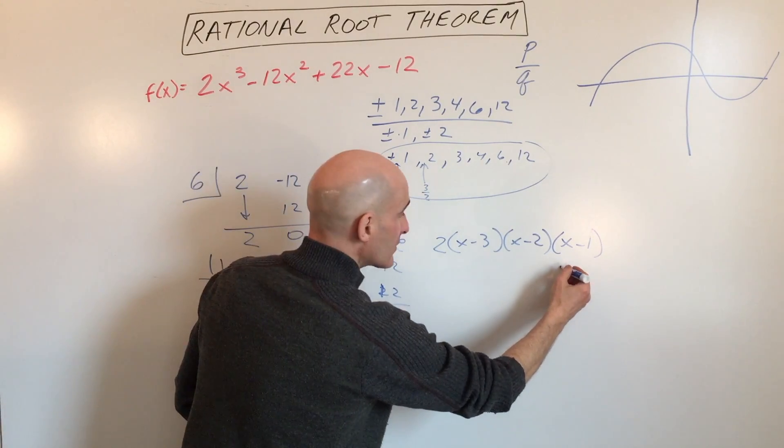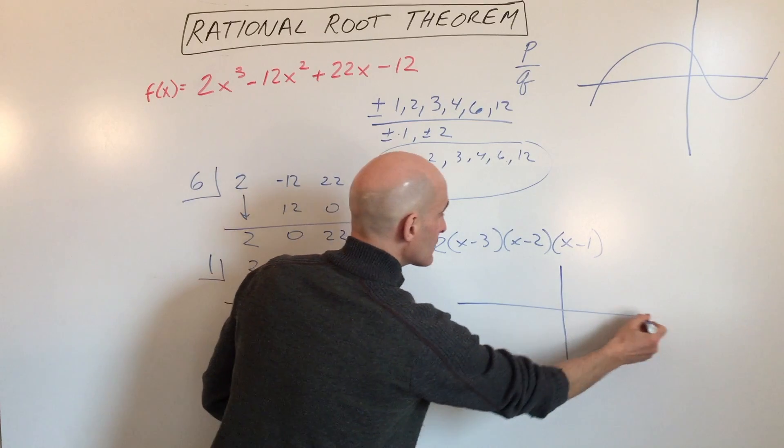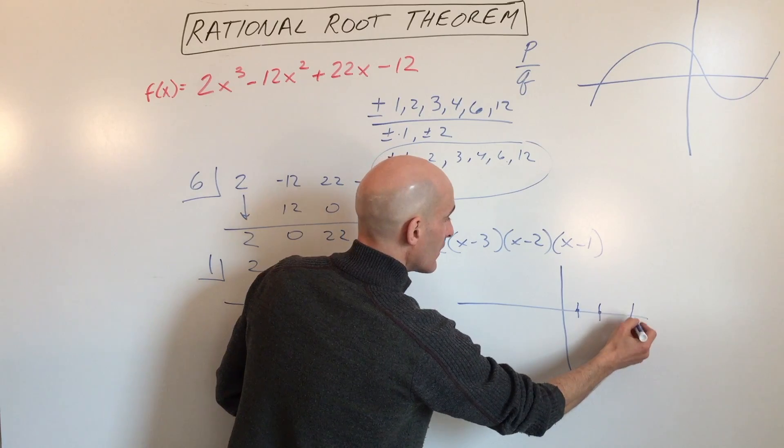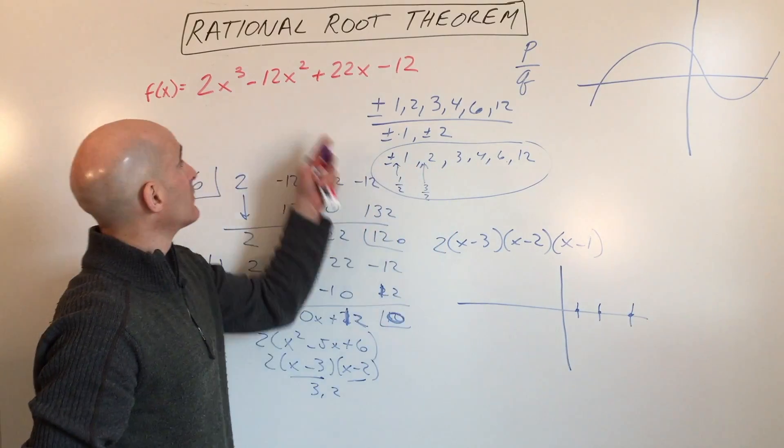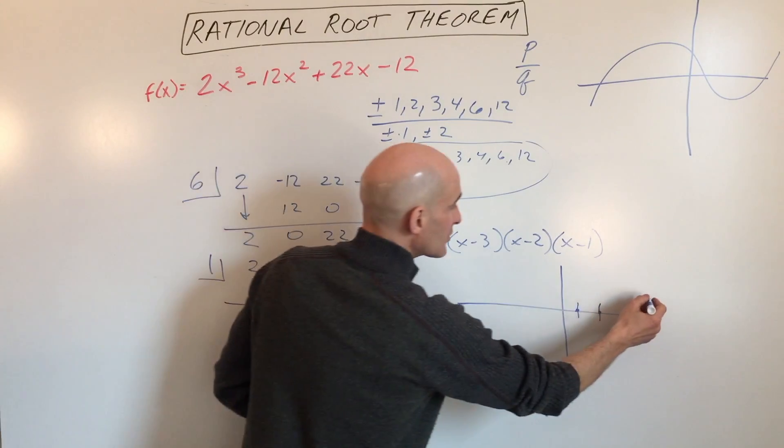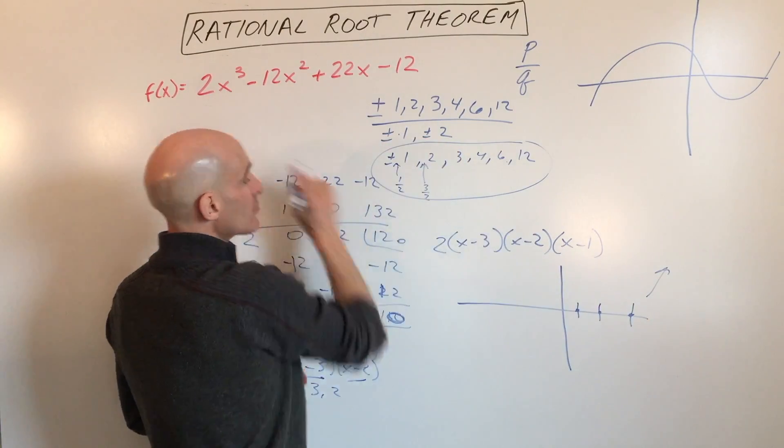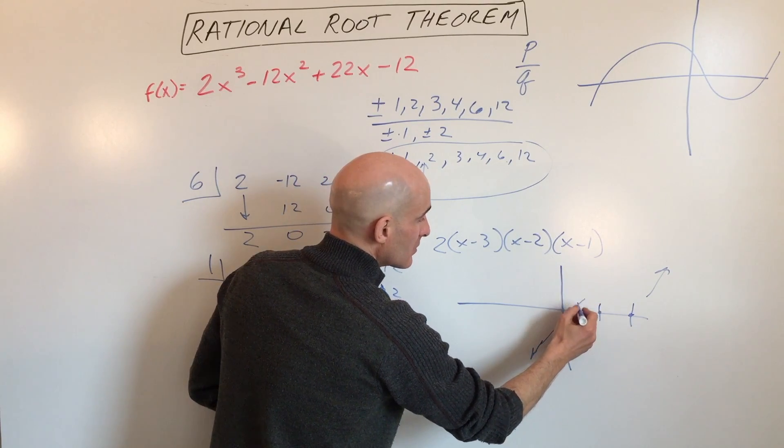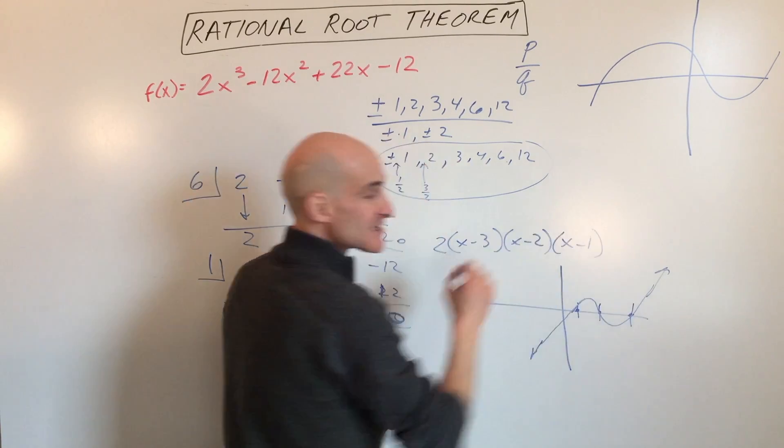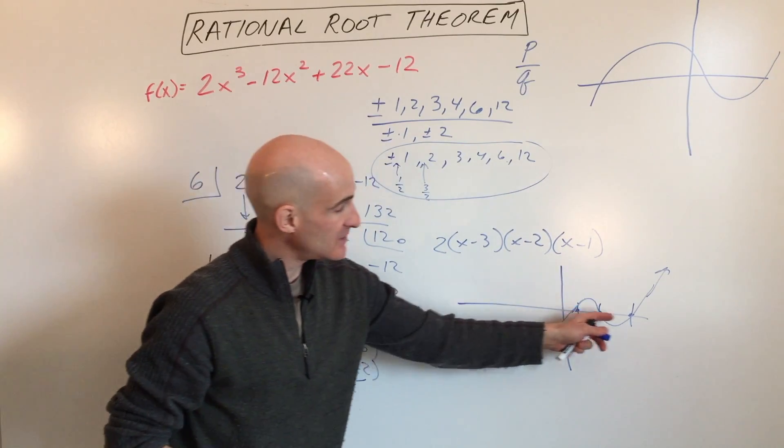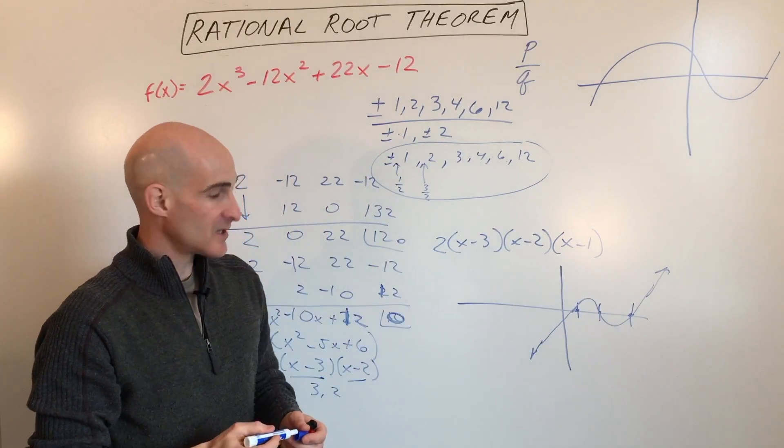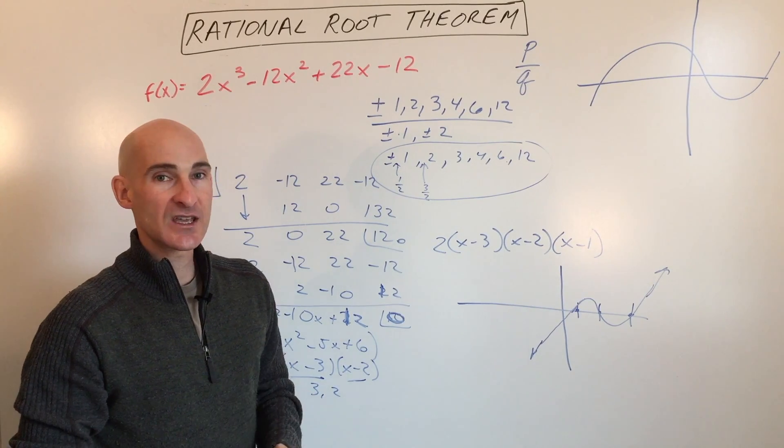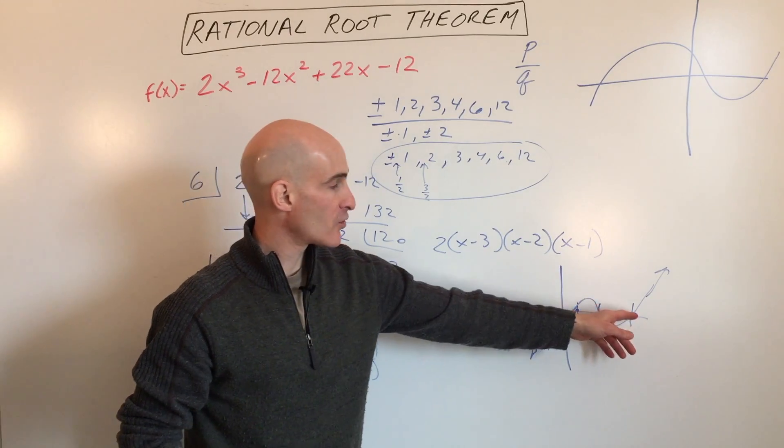If we wanted to graph this, it's going to cross here at 1, 2, 3. The leading coefficient is positive so that tells us it's going to go up to the right. It's an odd degree which tells us it's going to go the opposite way to the left. Just making a rough sketch here, the graph is going to look something like that. It's a quick way to get a sketch of this polynomial.